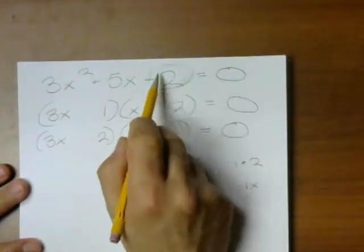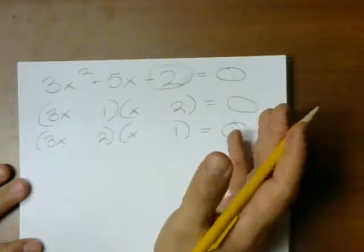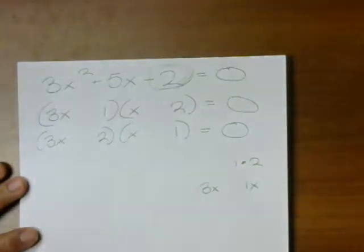Well, for this to end up as a minus 2, one of these is going to have to be a plus, and one of these is going to have to be a minus. Not only that, I have to think about what kinds of numbers I'm going to get.